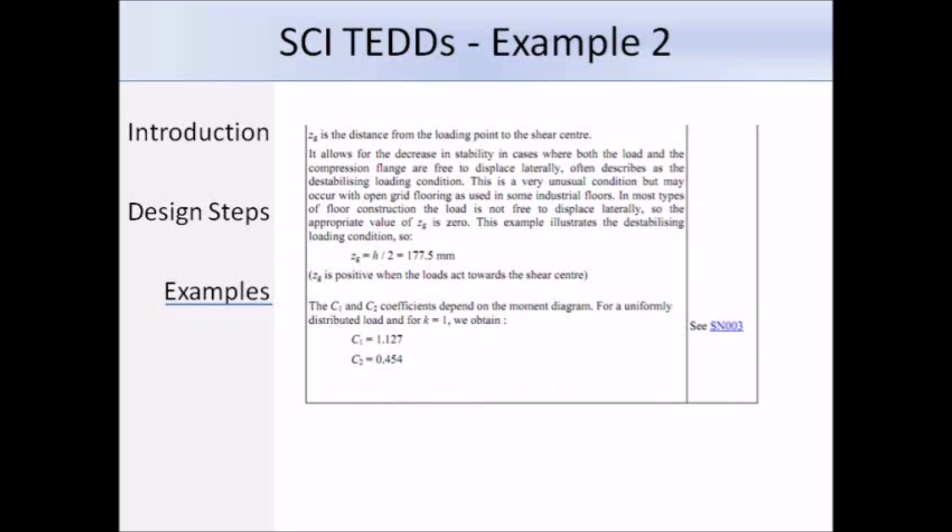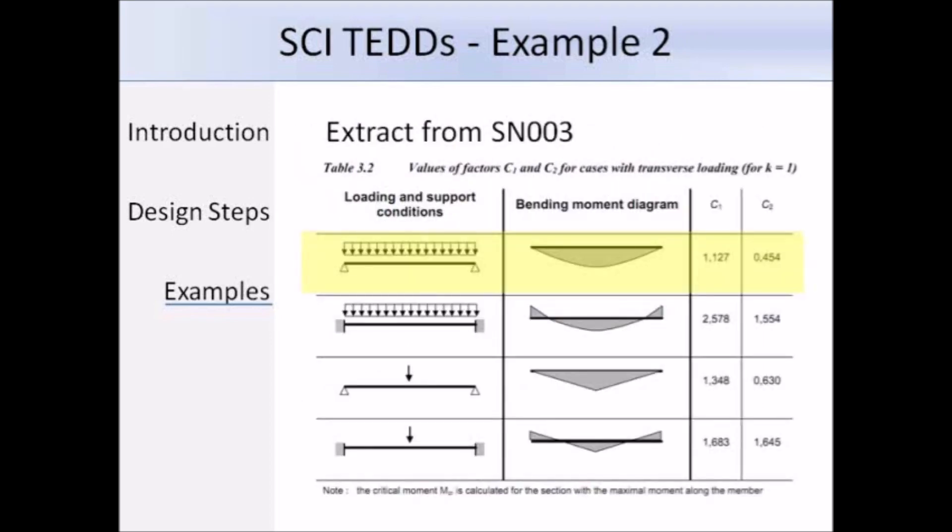And then C1 and C2 are 1.127 and 0.454 respectively. So here's table 3.2 from SN003, and it shows where it got those values for C1 and C2. So for a simply supported beam with a UDL, C1 is 1.127 and C2 is 0.454. Now substituting in the values, we get a critical moment of 124.6 kNm.